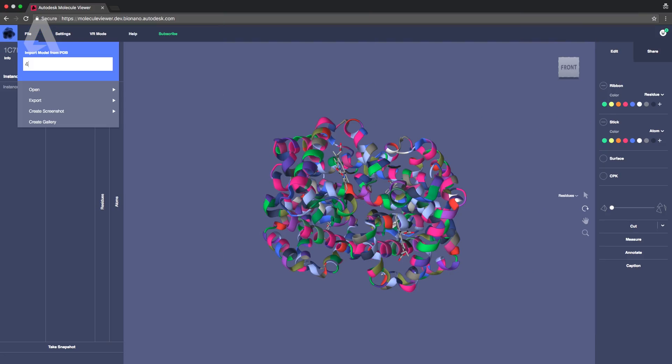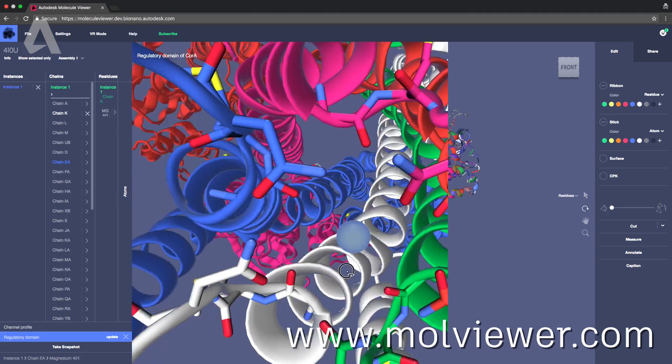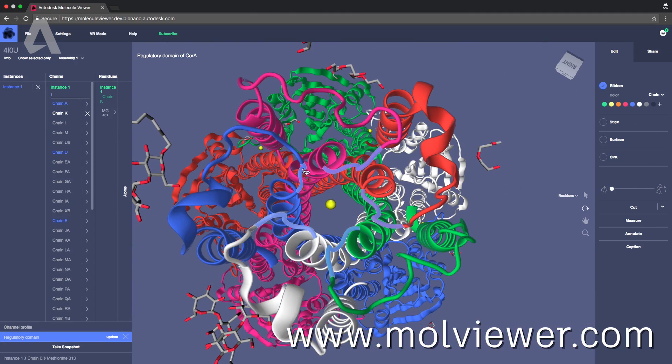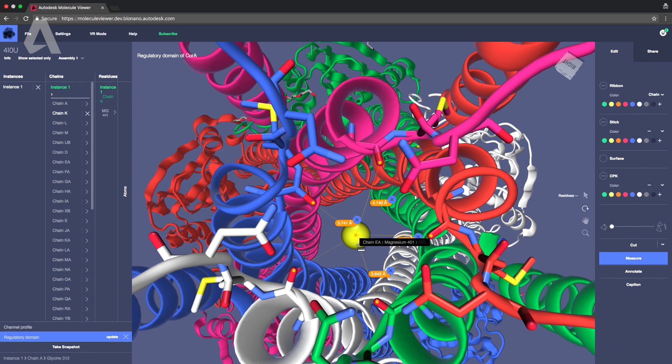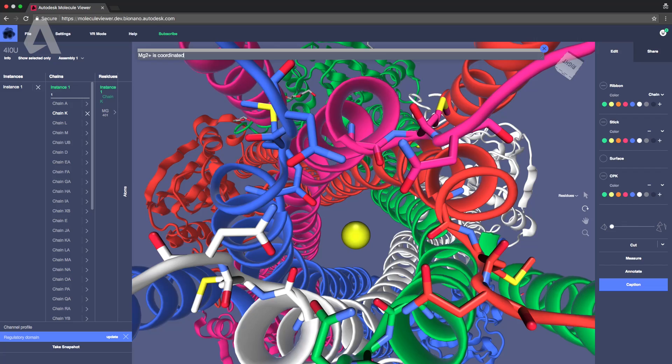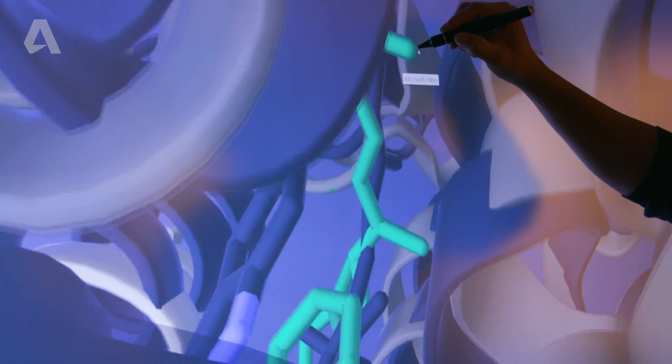Just load in any protein file from the protein data bank and visualize it in 3D. Customize its representation and color. Annotate your points of interest or caption the scene. Save snapshots of any state and share all of this content by generating a web link.